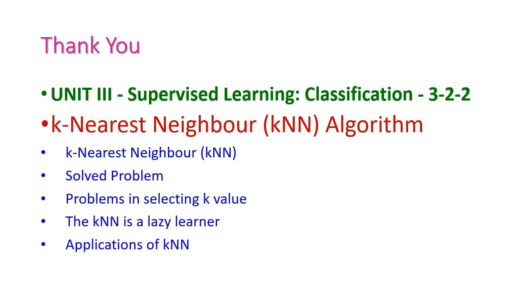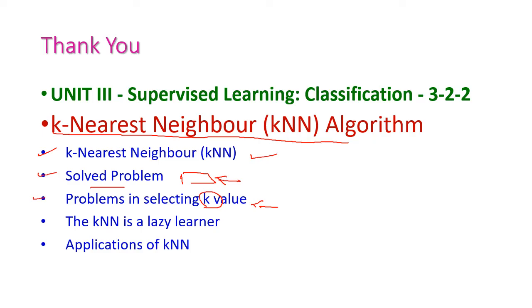To summarize, we have seen the K-nearest neighbor algorithm, learned its definition, solved a problem assigning a class label to a student, discussed problems in selecting the K value and their solutions, explained why KNN is a lazy learner algorithm, and covered some of its applications. In the next class, we will see the decision tree algorithm from the third unit.